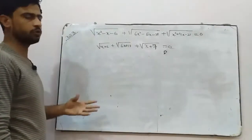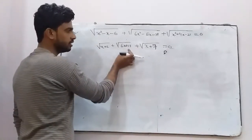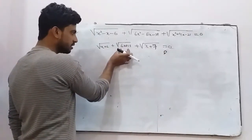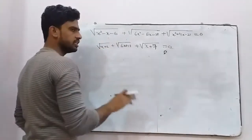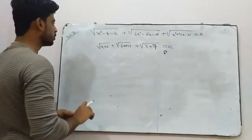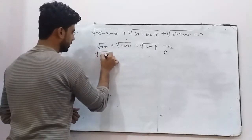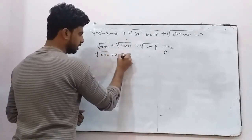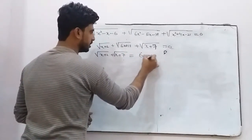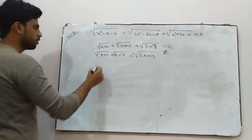We've found one solution x equals 3. To find more roots we solve the remaining equation. We take square root(6x plus 13) to the other side because taking any other term would make the algebra too complicated. So the equation becomes: square root(x plus 2) plus square root(x plus 7) equals square root(6x plus 13).